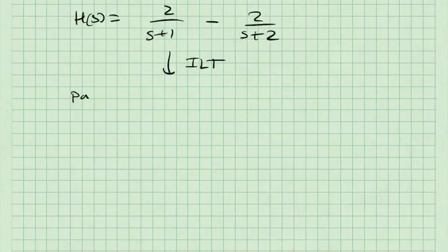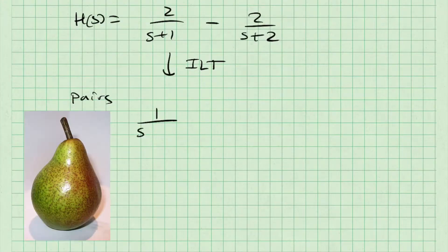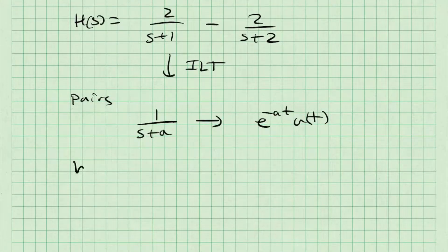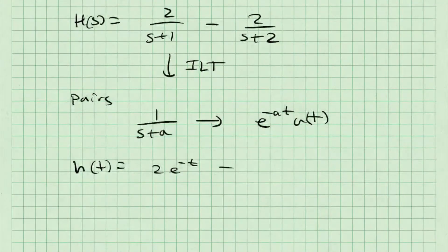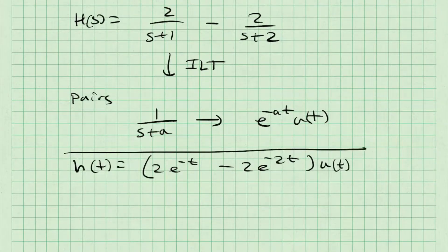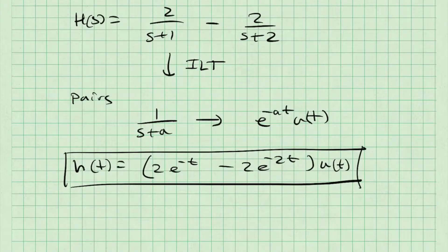To take the inverse Laplace transform, I'm going to use the pair that 1 over S plus A inverse Laplace transforms to E to the negative A·T·U(T). Applying that to my specific problem, h(T) — the inverse Laplace transform of H of S — is equal to 2·E to the minus T, minus 2·E to the minus 2T, all multiplied by U(T), which means this is true for time greater than or equal to zero.